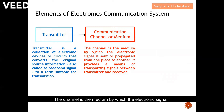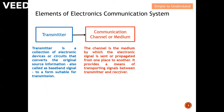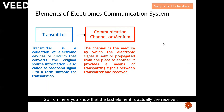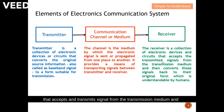The second element is the communication channel or medium. The channel is the medium by which the electronic signal is sent or propagated from one place to another. It provides a means of transporting signals between the transmitter and receiver. The third element is the receiver — a collection of electronic devices and circuits that accepts the transmitted signal from the transmission medium.